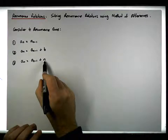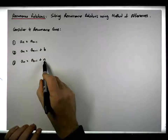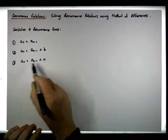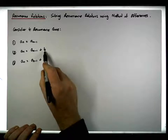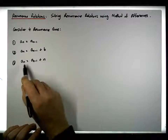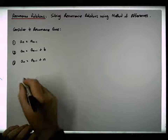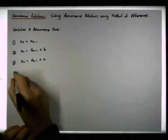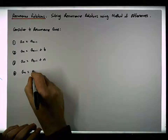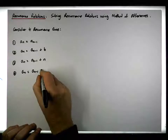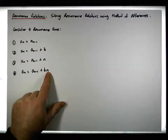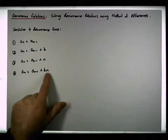So in case three it's not a constant — it is a variable dependent on the term we're looking for, in contrast to the previous case where b is a constant that doesn't change. And then finally, the fourth case is the nth term equal to a(n-1) plus some constant times the term we're looking for.